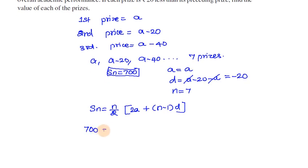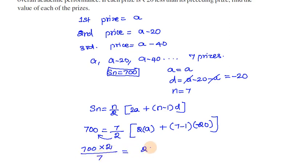Sn is 700 equals n is 7 divided by 2, into 2a plus n minus 1 (n is 7) into d, which is minus 20. So 700 = 7/2 × [2a + 6×(-20)].